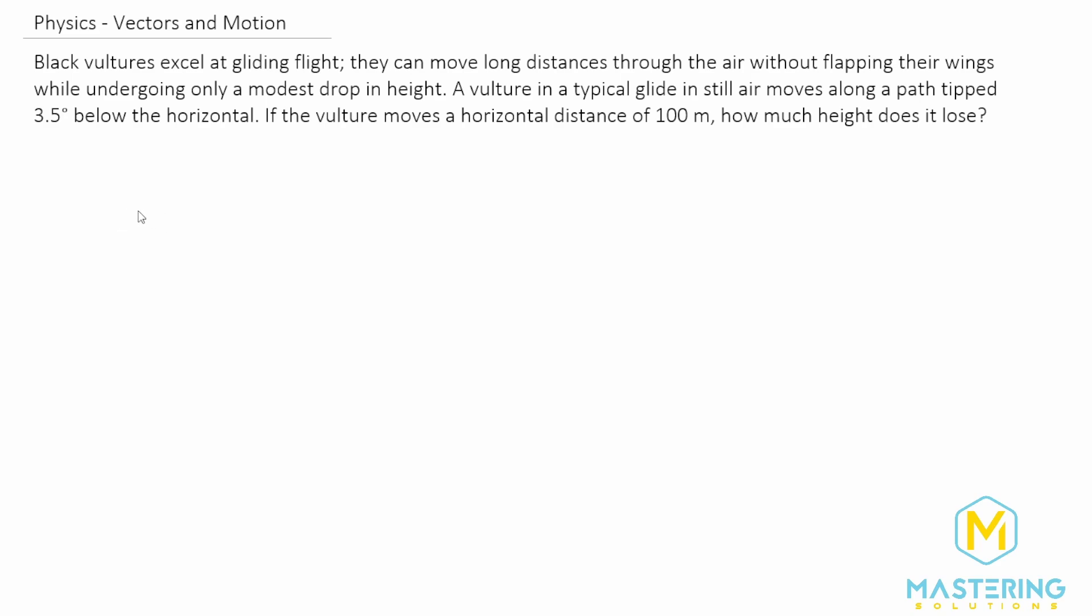They say that a vulture glides for a horizontal distance of 100 meters. So we have 100 meters here. And they say that normally the vultures will glide down at an angle of 3.5 degrees below the horizontal. I'm exaggerating this a little bit.